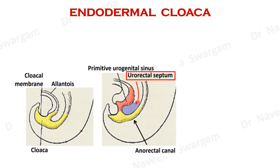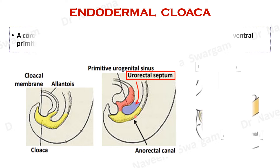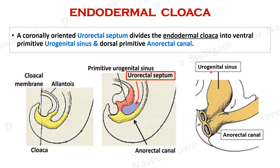The urorectal septum grows more caudally to meet with the cloacal membrane and divides the endodermal cloaca into ventral and dorsal parts. The ventral part is known as primitive urogenital sinus, whereas the dorsal part is known as primitive anorectal canal.